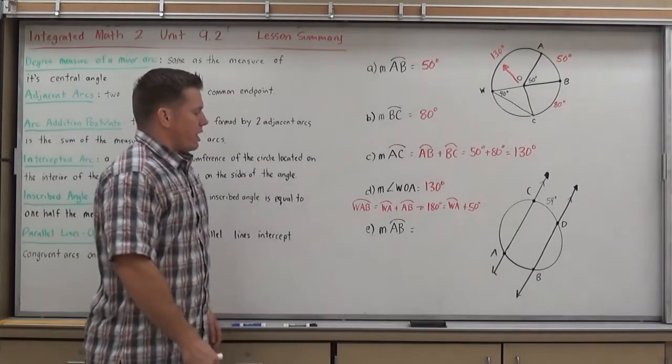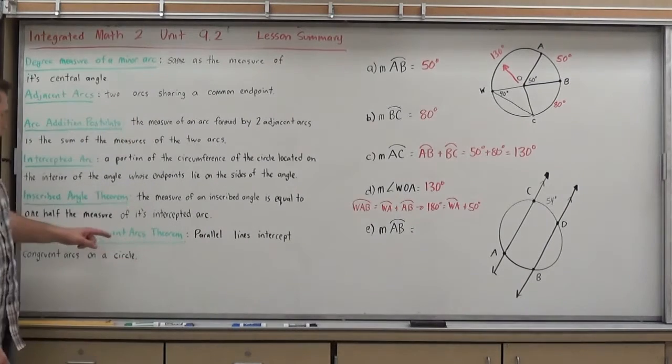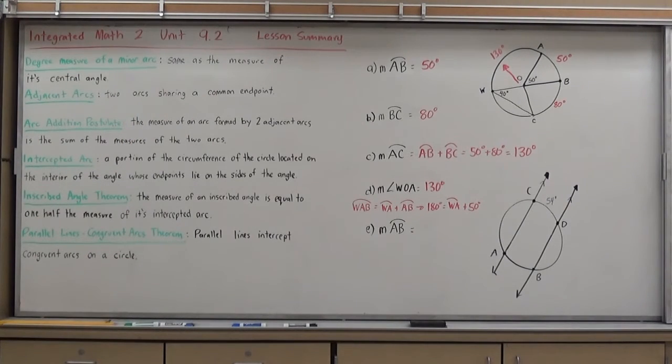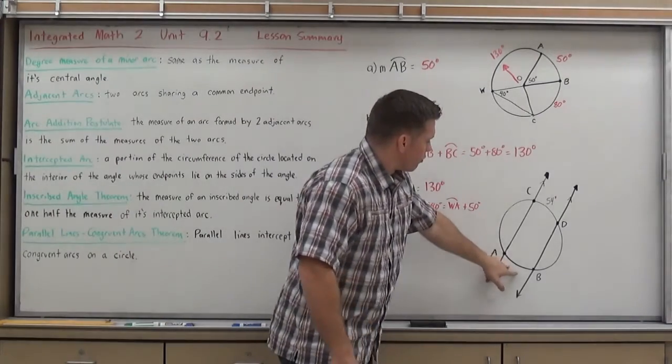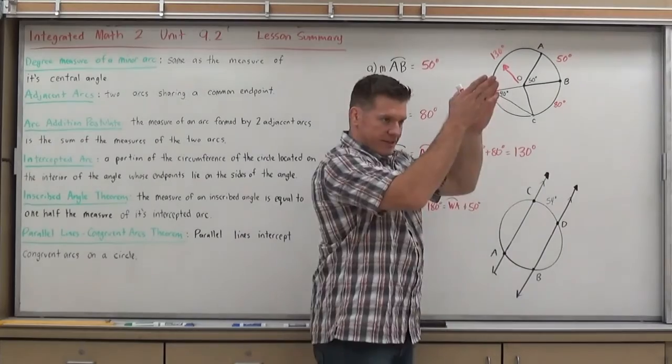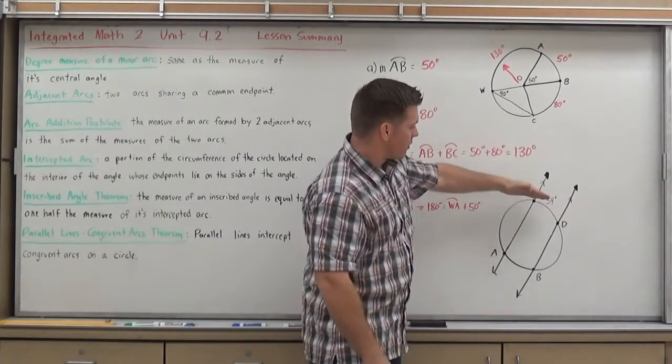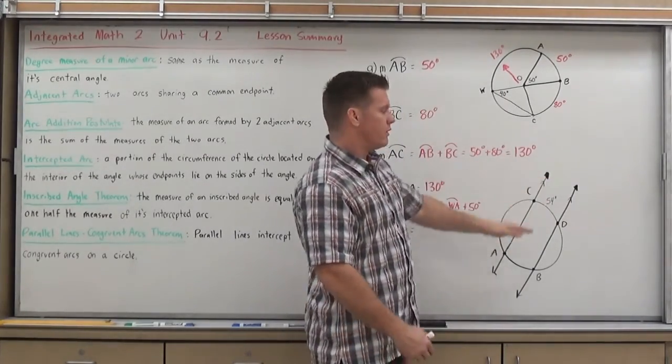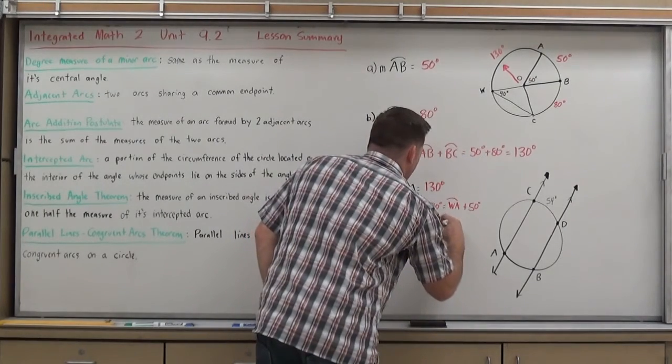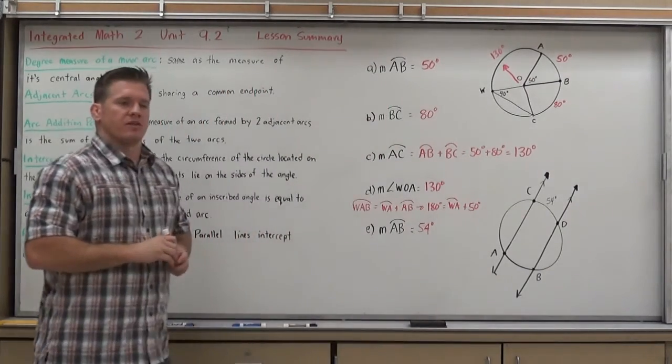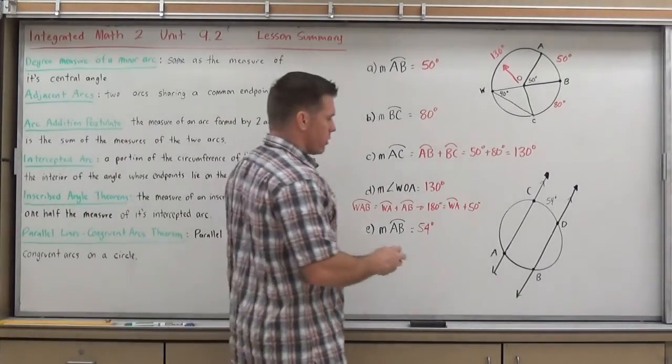Okay, our last one. So let's find the measure of arc AB. Now, if I knew this theorem already, parallel lines to an arc theorem, I would know that arc AB is just always going to be congruent to the other arc that's in between the parallel lines. Just make sure you remember it's the ones between the parallel lines. So I know by that theorem, arc AB has to be 54 degrees. But let's talk about the why. The why is more important.